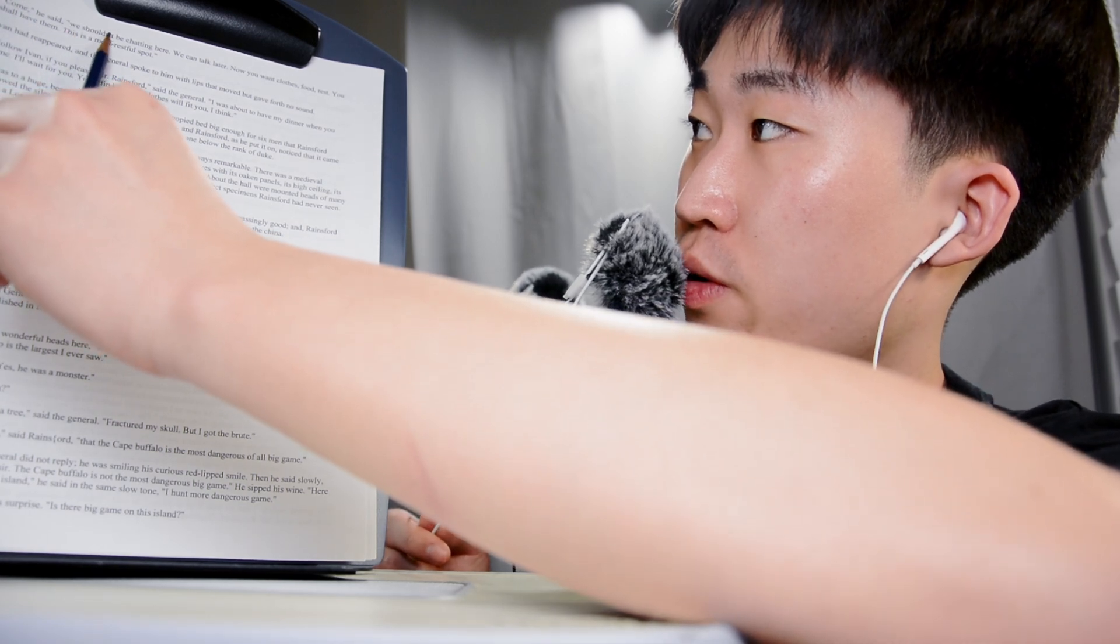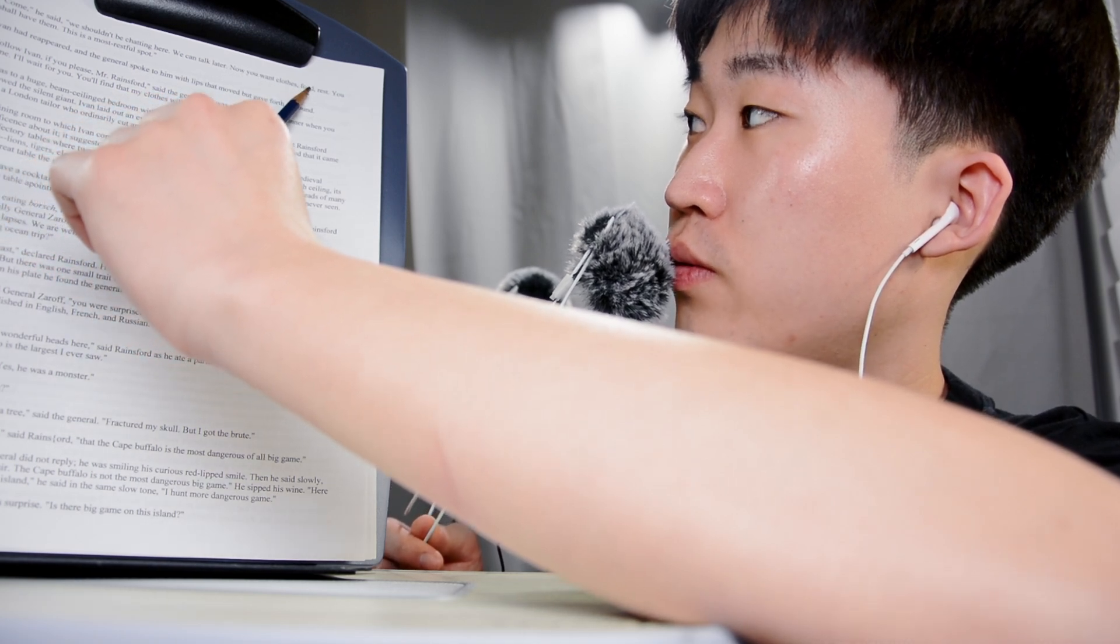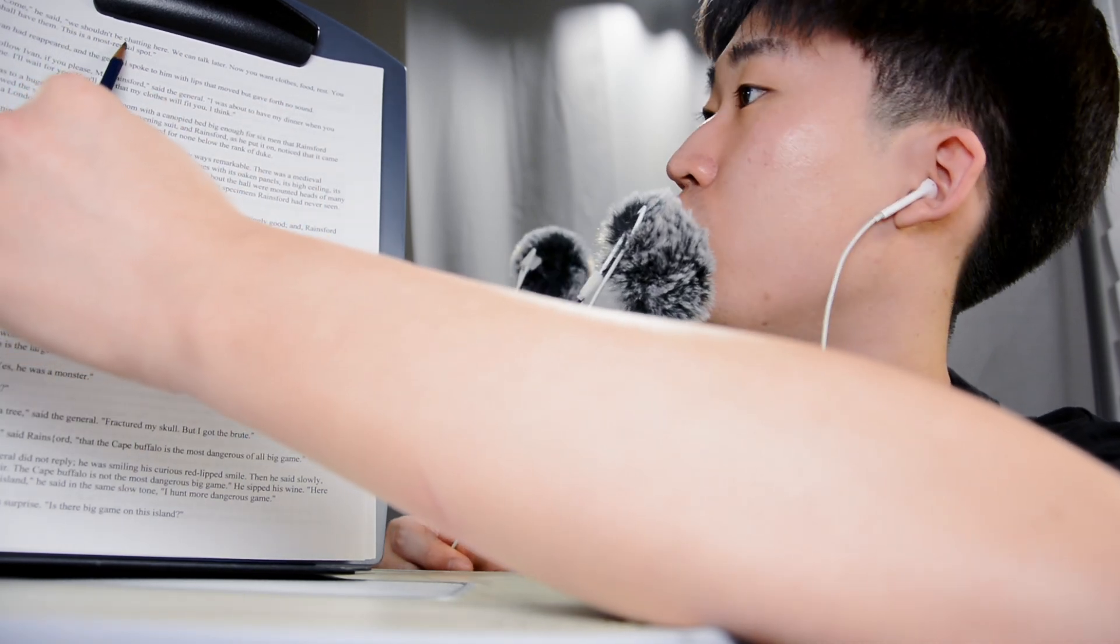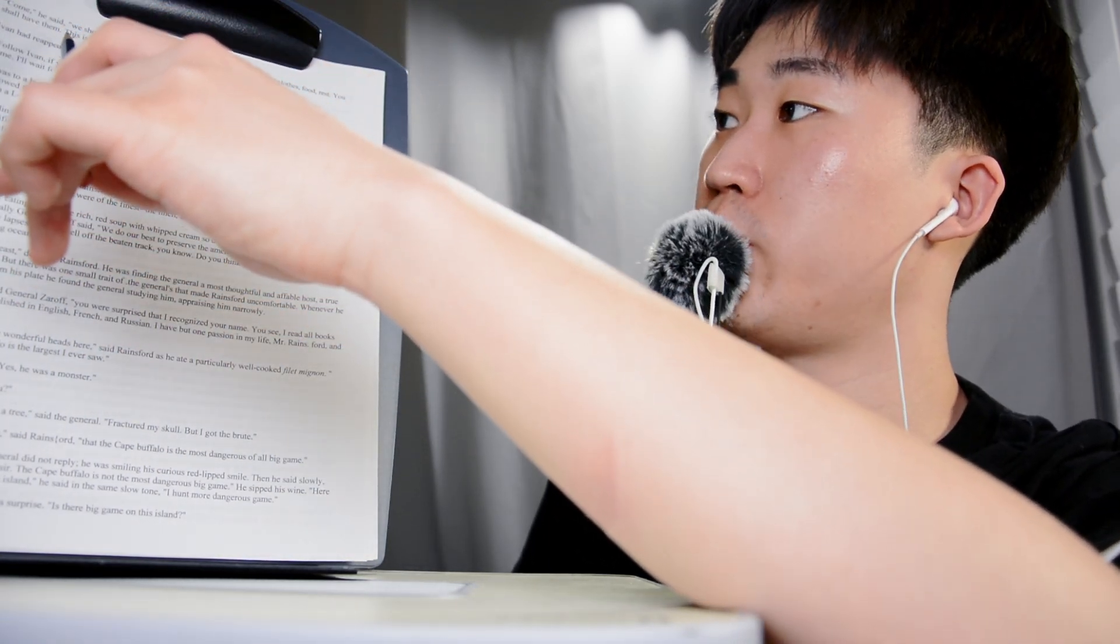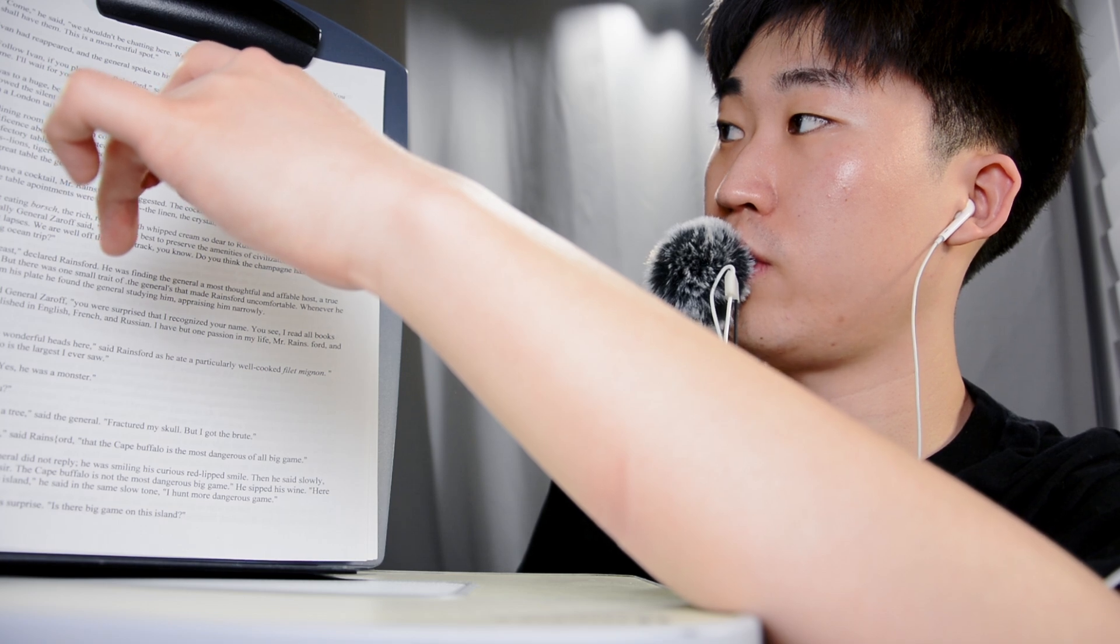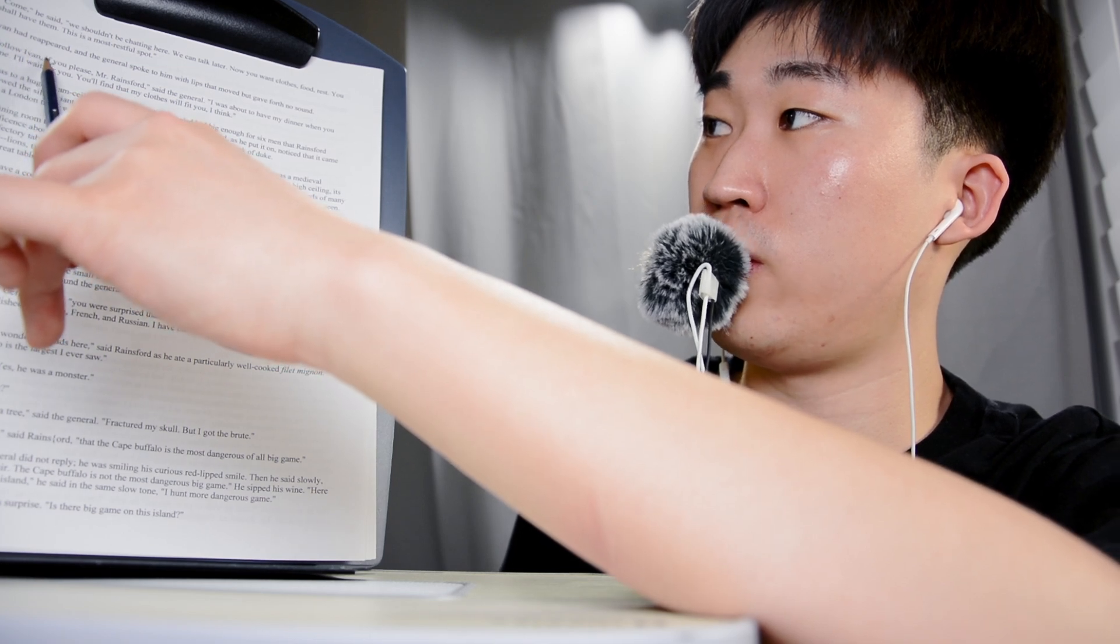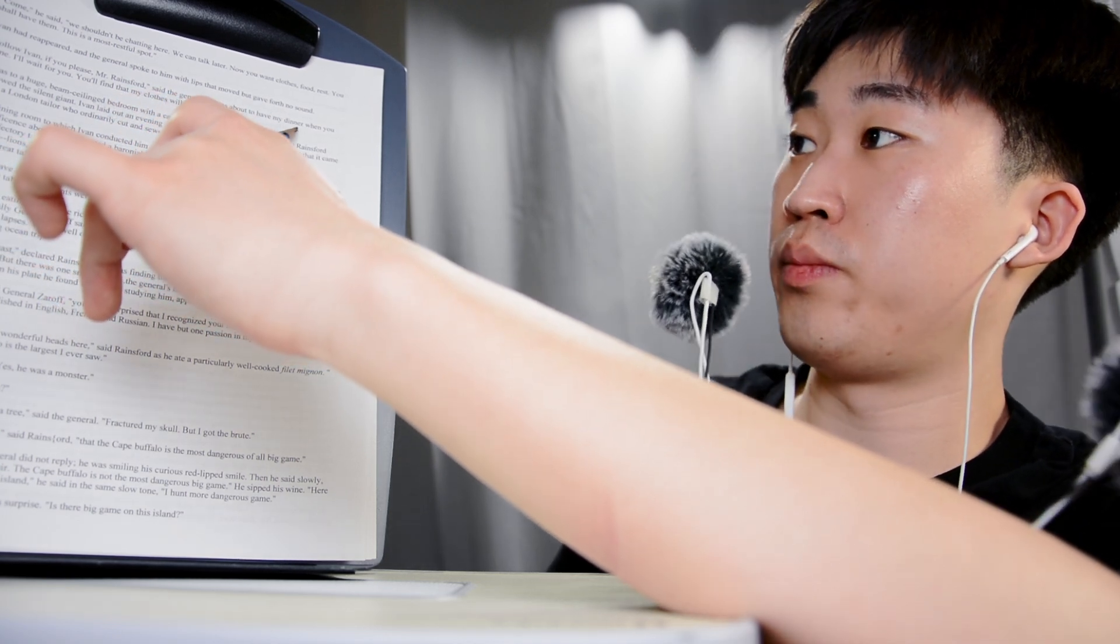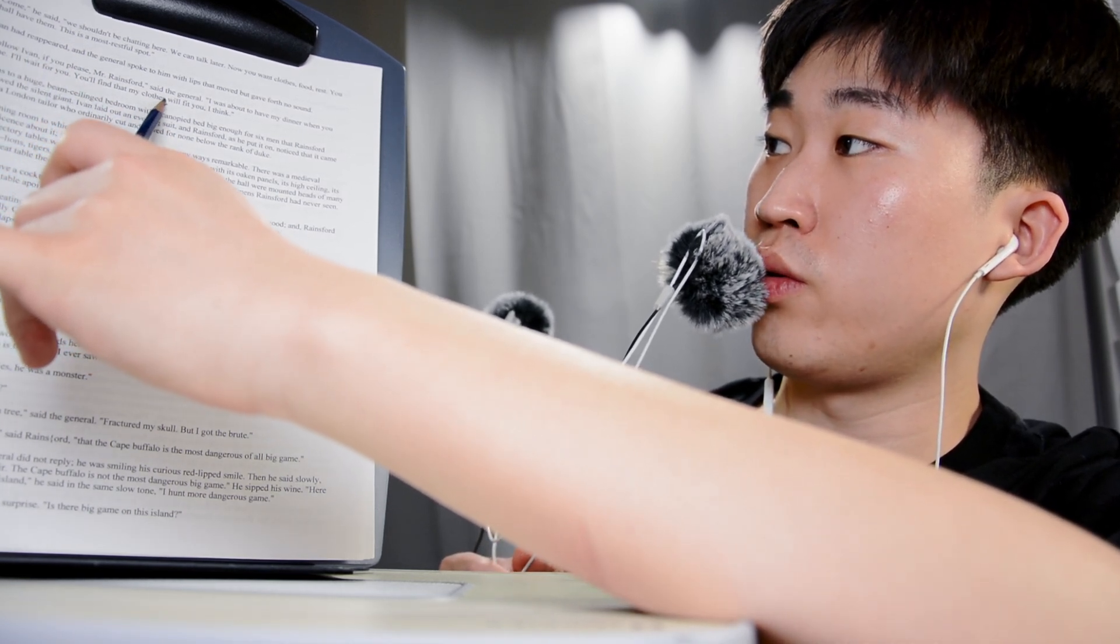Ivan is an incredibly strong fellow, remarked the General. But he has the misfortune to be deaf and dumb. A simple fellow but I'm afraid, like all his race, a bit of a savage. He is a Cossack, said the general, and his smile showed red lips and pointed teeth. So am I. Come, he said. We shouldn't be chatting here. We can talk later. Now you want clothes, food, rest? You shall have them. This is the most restful spot. Ivan had reappeared, and the general spoke to him with lips that moved but gave forth no sound. Follow Ivan, if you please, Mr. Rainsford, said the general. I was about to have my dinner when you came. I'll wait for you. You'll find that my clothes will fit you, I think.